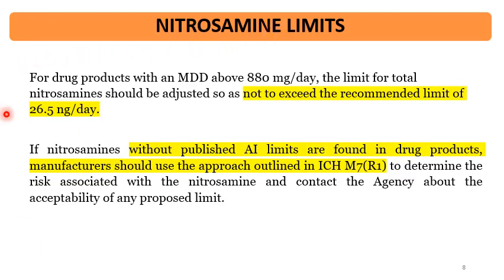For drug products with an MDD above 880 mg per day, the Nitrosamine limit should be adjusted so as not to exceed the recommended limit of 26.5 nanogram per day — which is the limit of the most potent Nitrosamine impurity. This value is derived from the calculation and principles given in the ICH M7 guideline for mutagenic impurities, based on the 1-in-100,000 species principle.